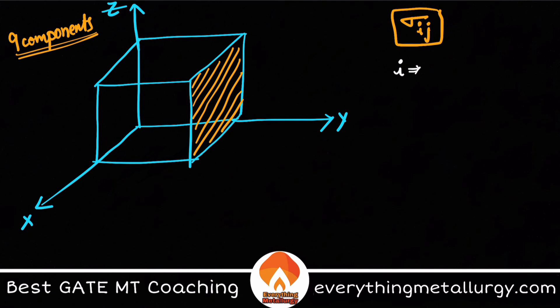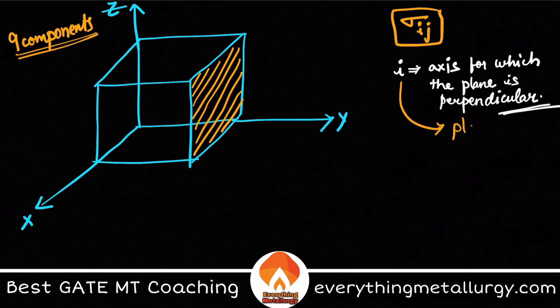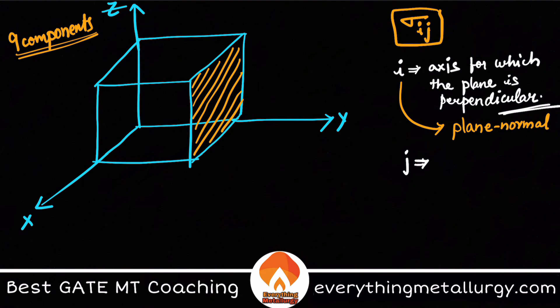Here, i is the axis for which the plane is perpendicular, or in other words, i is the direction of the plane normal — that's the easy way to remember it. j is the direction in which the stress is acting, whether shear or normal.